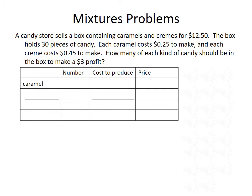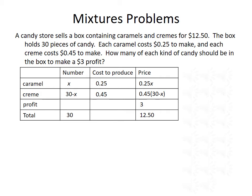We're going to have a row for caramels, a row for creams, a row for the profit, and a row for the total. Let's assume the number of caramels in the box is X. We were told the total number of candies is 30, so the number of creams will be 30 minus X. It costs $0.25 to produce a caramel and $0.45 to produce a cream. To compute the overall price, we multiply number times cost: for caramels, 0.25X; and for creams, 0.45 times 30 minus X. We want to make a $3 profit, and the total cost of the box should be $12.50.